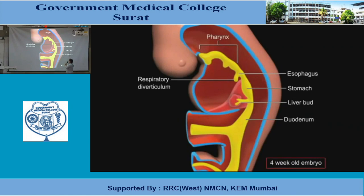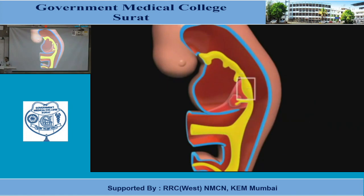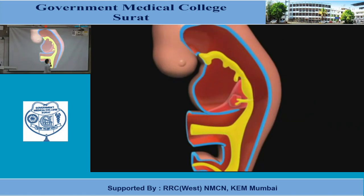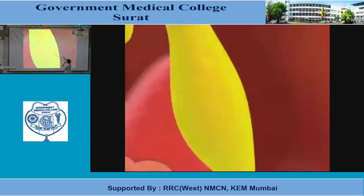Similarly, the liver bud. The liver bud is at the junction of foregut and midgut. And at this same junction, you will also see the pancreatic bud arising.